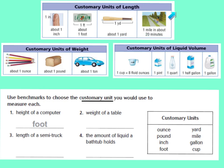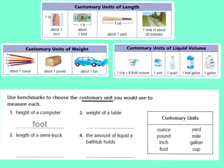Now we're going to talk about customary units of weight. About one ounce would be how much some colored pencils weigh. About one pound would be a whole loaf of bread. One ton is a lot — that's about the weight of a car or about the weight of an elephant.